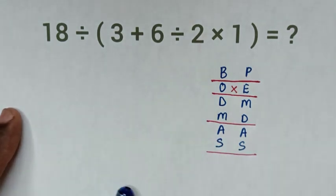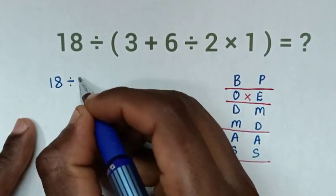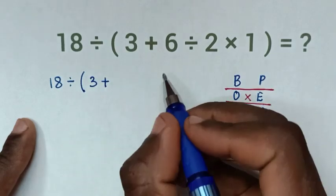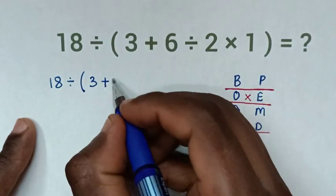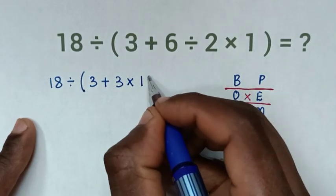So, from our problem, it will be 18, then divide by bracket, 3, then plus 6 divided by 2 is 3, then times this 1 bracket.